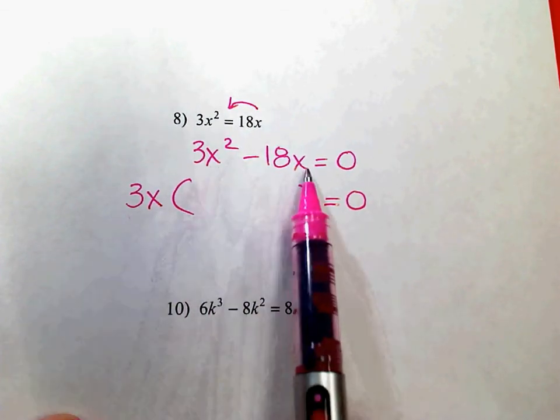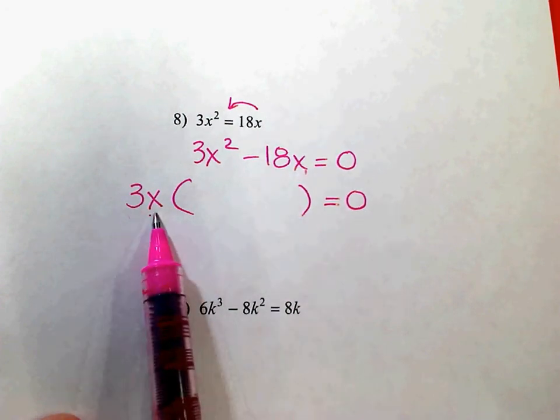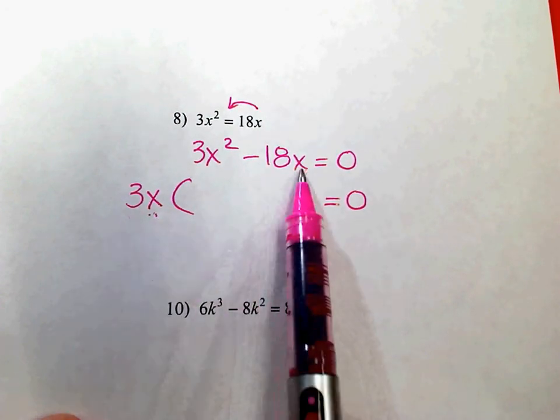I hope you decided that the GCF is 3 and 1x because 3 and 18 are both divisible by 3. This term has 2x's. This one has 1, so they can each give up 1. I can't take more away than what this one has to give.